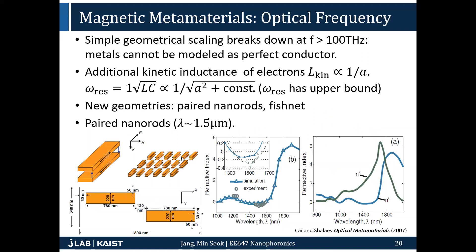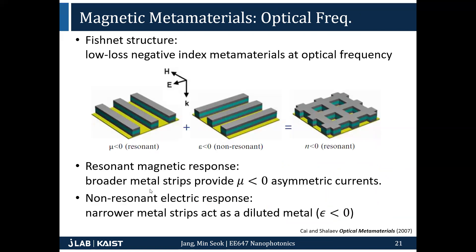People also came up with many different forms of metamaterials, one of which is the fishnet structure. If you have an electromagnetic wave polarized in one direction with the magnetic field in another, one set of bars in the fishnet is active for the magnetic wave, and the other bars — along the electric field — are active for the electric field. So if you have a fishnet structure, it's active for both electric and magnetic fields, allowing you to achieve negative refraction.